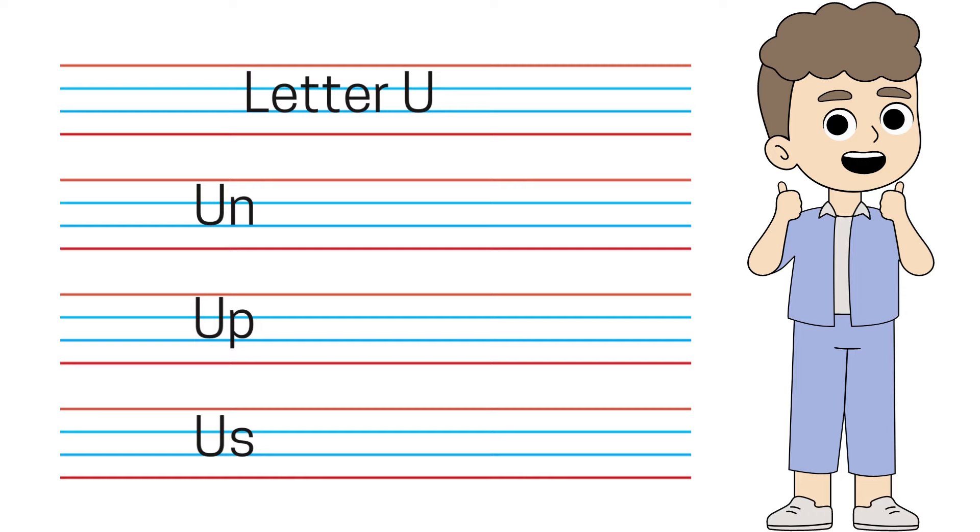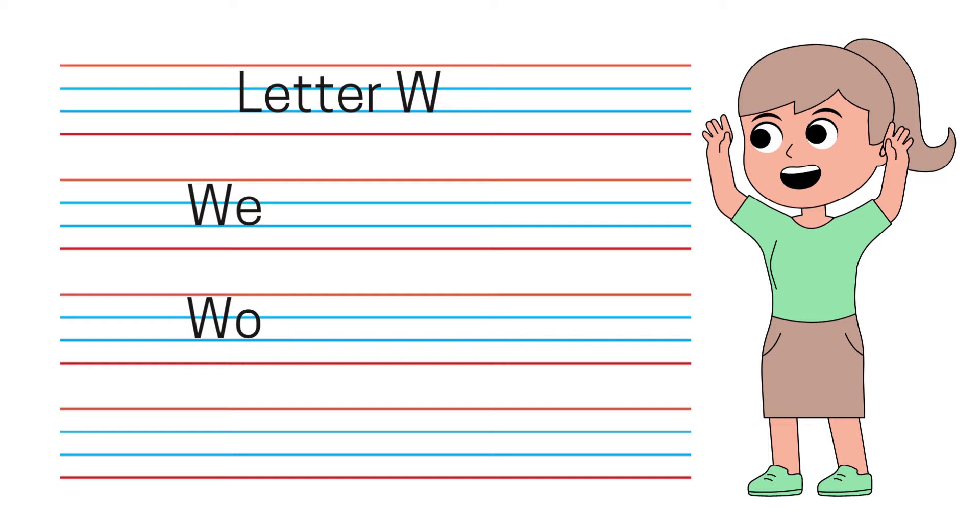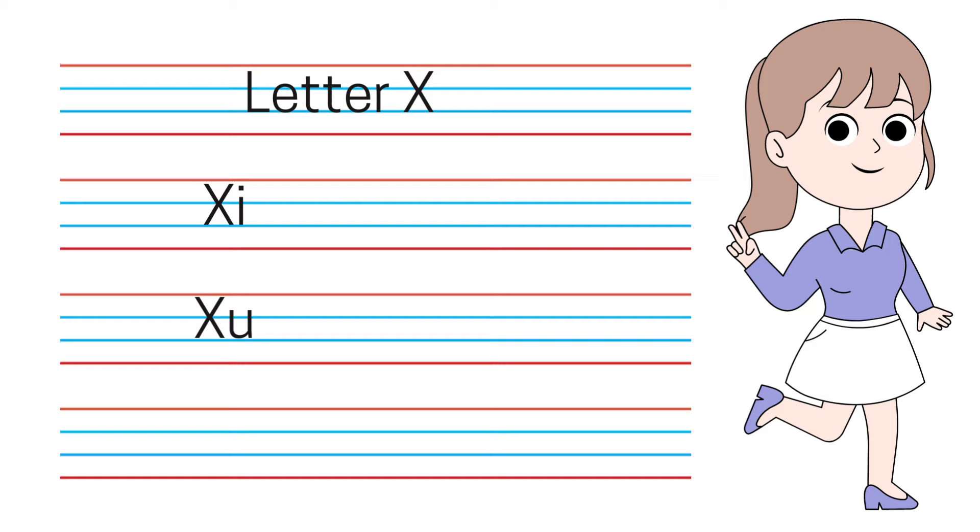Letter U. U-N, Un. U-P, Up. U-S, Us. Un, Up, Us. Letter V. V-U, Verb. Letter W. W-E, We. W-O, Wo. Letter X. X-I, Xi. X-U, Xu.